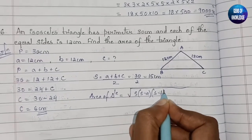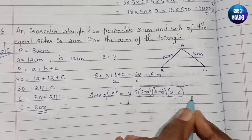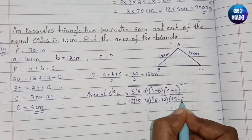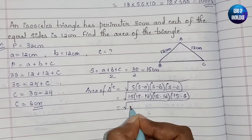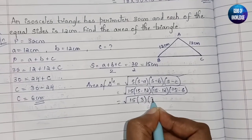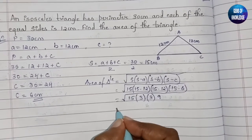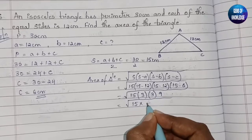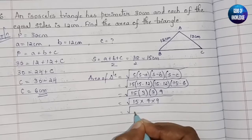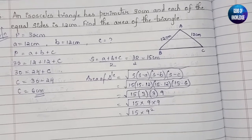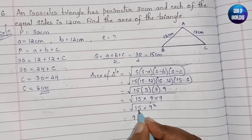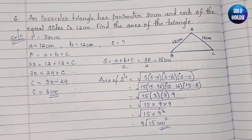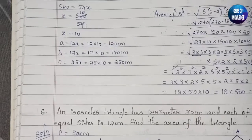Applying Heron's formula: area equals root of s(s−a)(s−b)(s−c) equals root of 15 × (15−12) × (15−12) × (15−6) equals root of 15 × 3 × 3 × 9. This is root of 15 × 9², so the 9 squared cancels with the root, giving 9√15 centimeter square as the final answer.